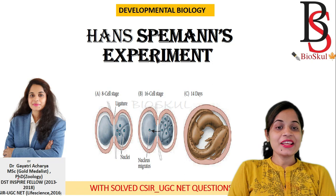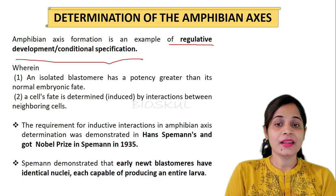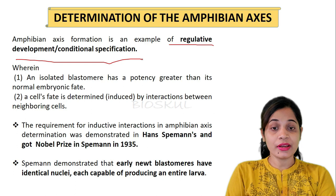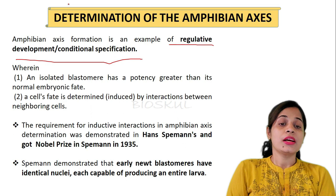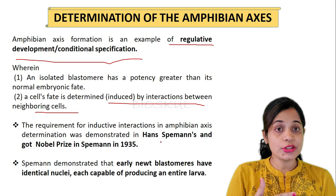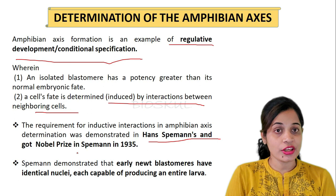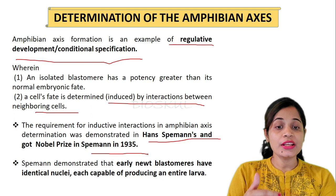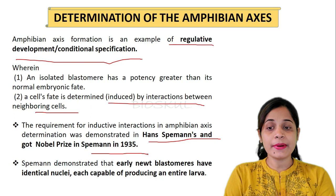Let's see Hans Spemann's experiment on embryonic induction. In early amphibians, the determination of the amphibian axis is an example of regulative development or conditional specification. This means the fate of a cell depends on its position in the embryo — the cell fate is determined by neighboring cells, and the blastomeres have a potency greater than their normal embryonic fate.